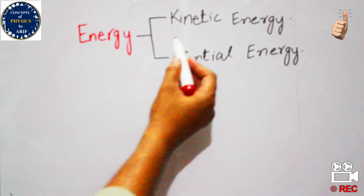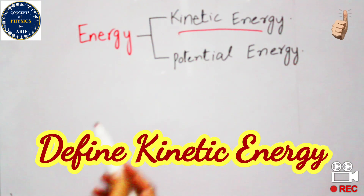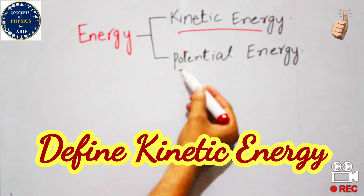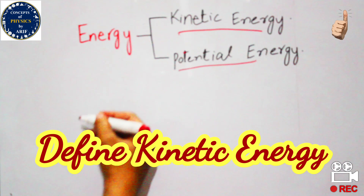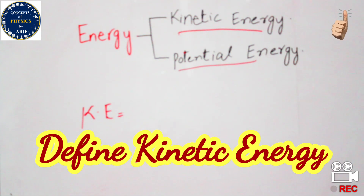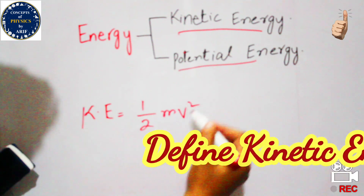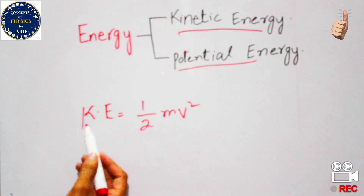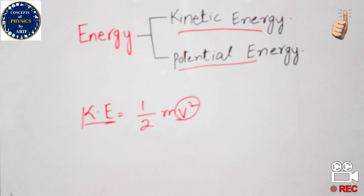First we need to define kinetic energy, its formula, and its dimensions. The definition of kinetic energy is the ability of a body to do work due to its motion. The formula is one-half mv squared, meaning it depends only on velocity.